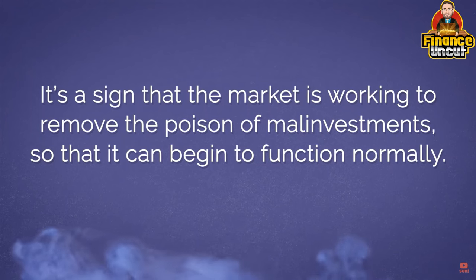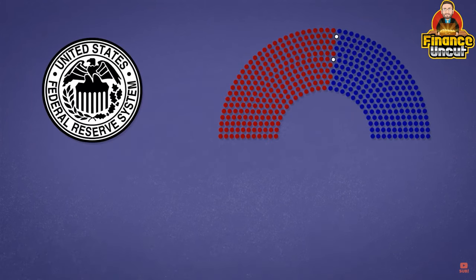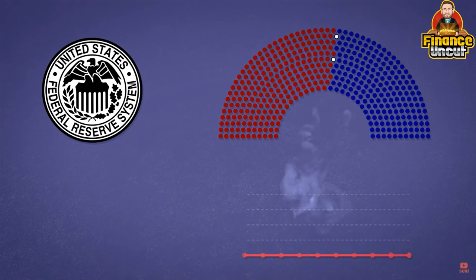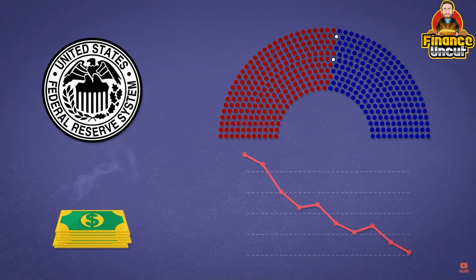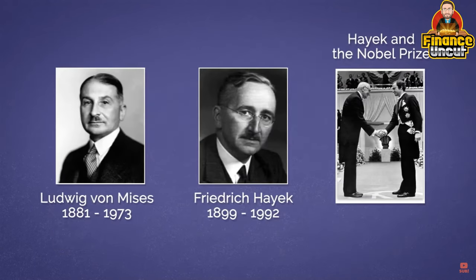It is painful and unpleasant, but it's eventually healthy. It's a sign that the market is working to remove the poison of mal-investments so it can begin to function normally. Unfortunately, in recent times when the crash comes, governments and central banks do not allow for this detox — they treat the problem by giving the drug addict another dose of the drug, lowering rates again and injecting cheap credit into the banking system. This is not a healthy nor sustainable process. The Austrian business cycle theory was developed by Ludwig von Mises and then by F.A. Hayek, who won a Nobel Prize for his work.